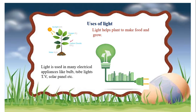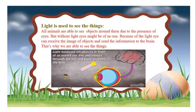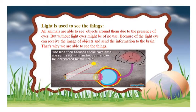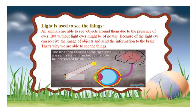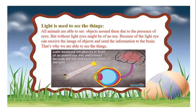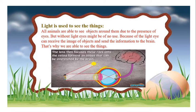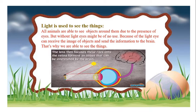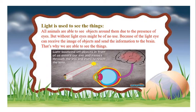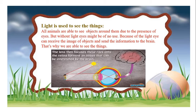Light is also used in many electric appliances, like bulb, torch, tube light, TV, and solar panel. Light is used to see things. All animals are able to see objects around them due to the presence of eyes. But without light, eyes might be of no use. Because of light, the eye can receive the image of an object and send information to the brain. That's why we are able to see things. When light falls on an object, it bounces off the object in front of us and enters our eyes, passing through the iris and pupil, which are internal parts of our eye, and then finally reaches the lens. The image is formed on the retina of our eye.